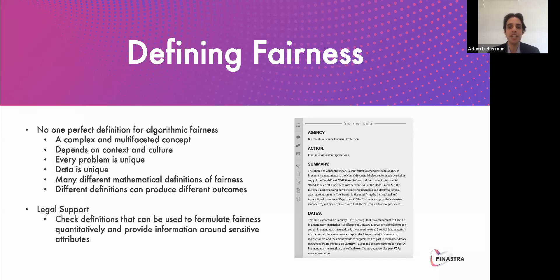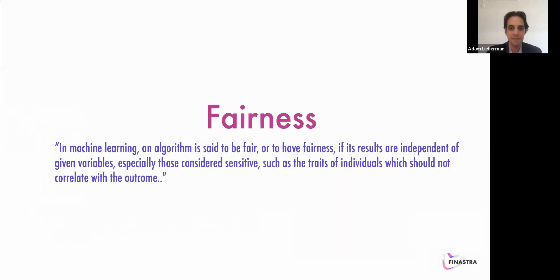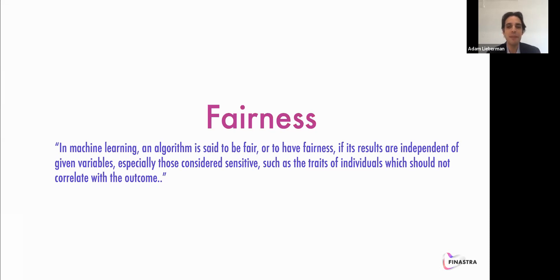One attempted definition that I like is: in machine learning, an algorithm is said to be fair if its results are independent of given invariables, especially those considered sensitive, such as the traits of individuals, which should not correlate with the outcome. To sum this up, we could say an algorithm has fairness if it does not produce unfair actions or representations for our individuals or groups.